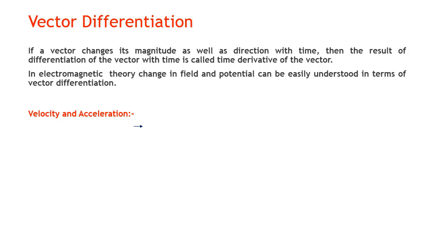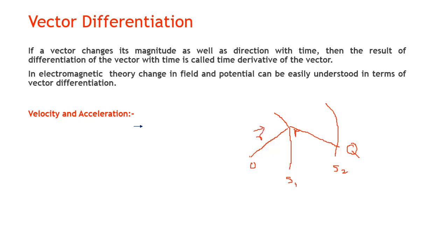We will use simple examples — velocity and acceleration — to express vector differentiation. Suppose there are two surfaces, s1 and s2. There is a point O, and we draw OP and OQ. The position vector is r, where OP is the position vector r, and r plus delta r is the new position vector, which is changing with respect to time.